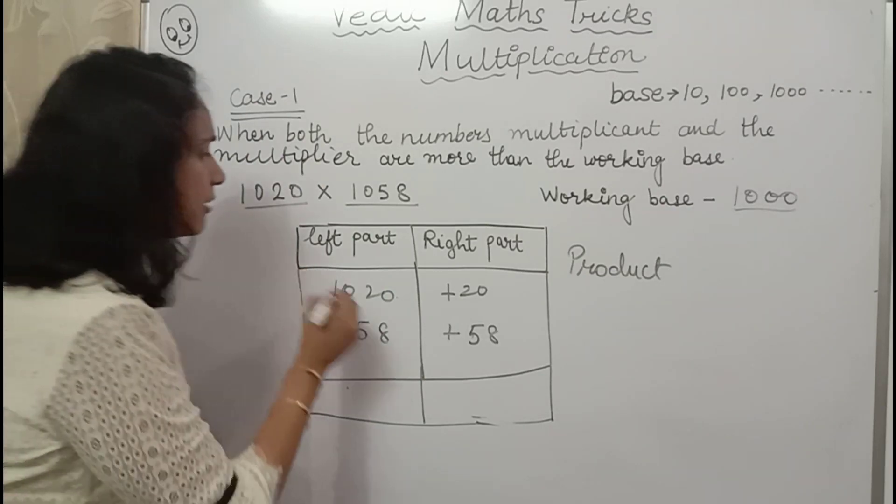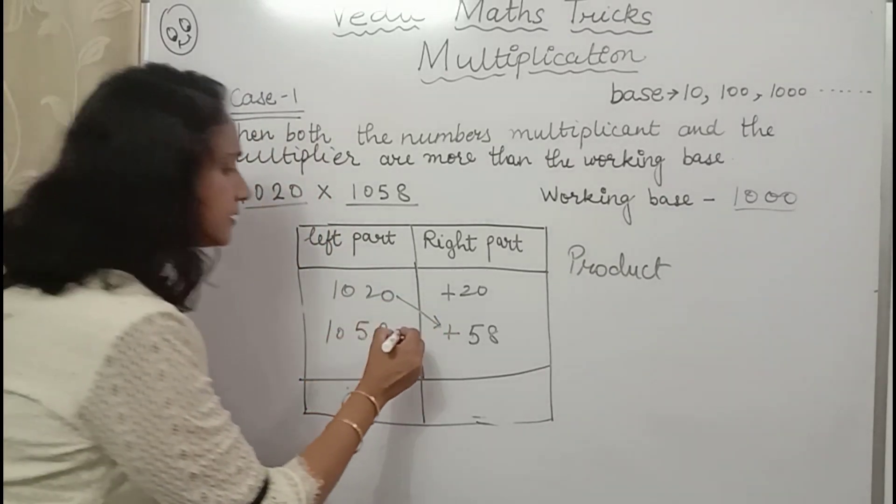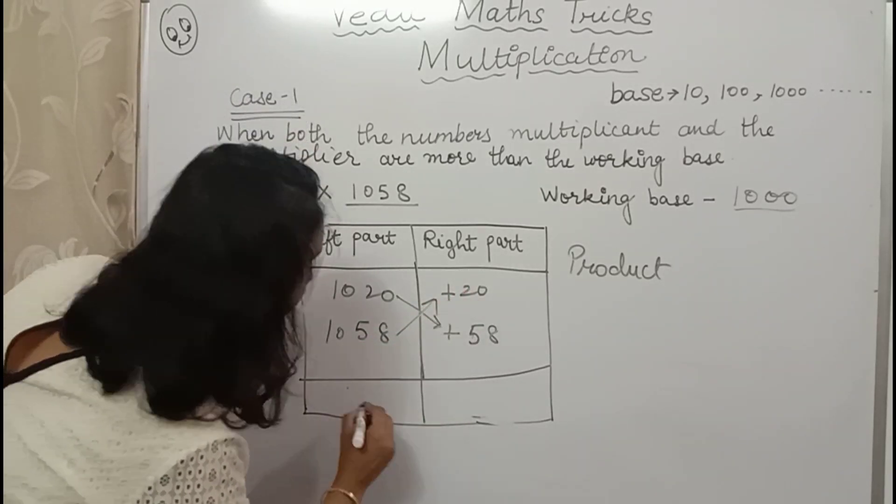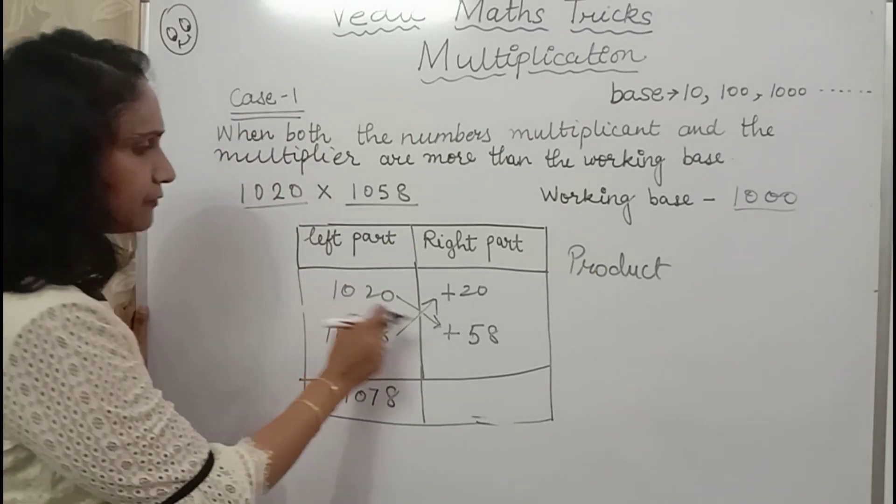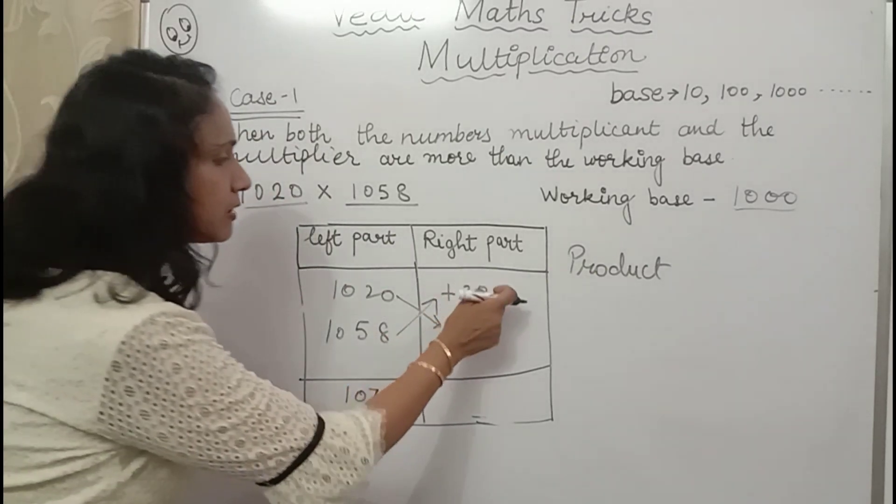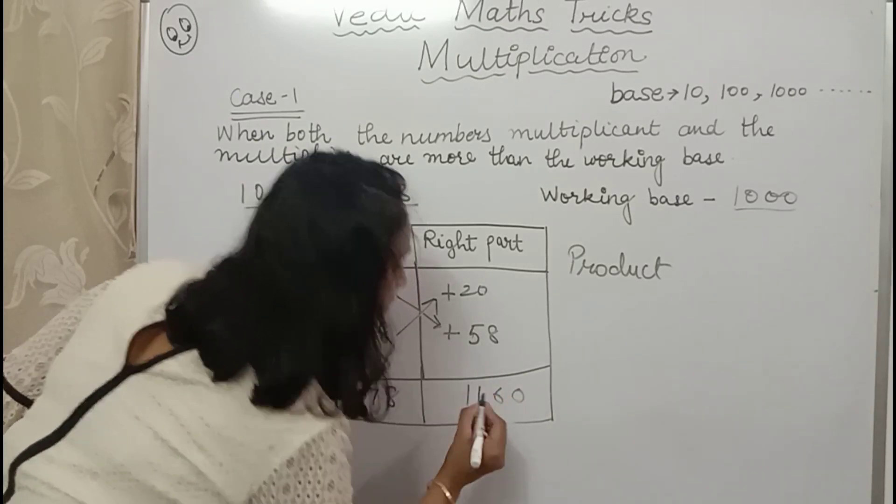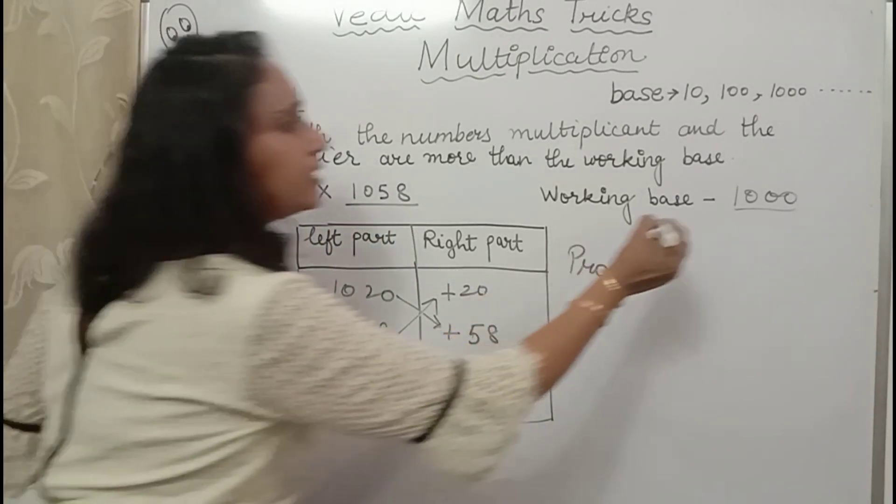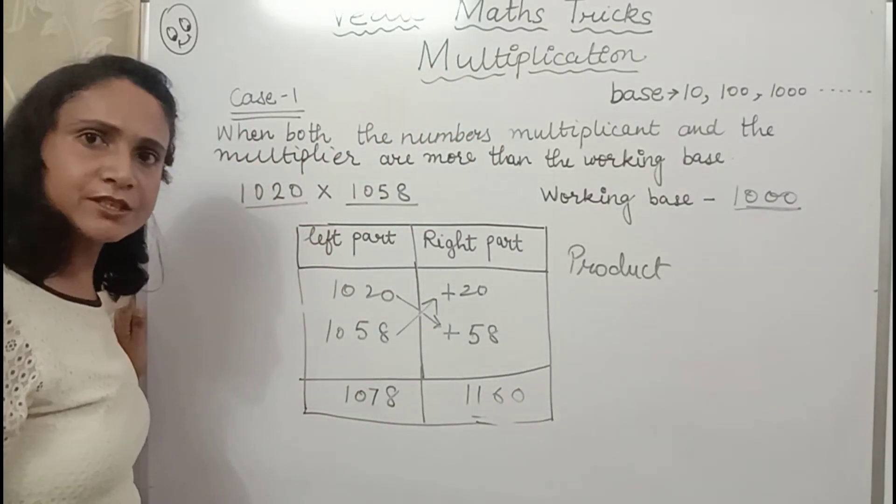First we will find out the left part by evaluating our cross. I told you both ways, you will get the same answer. 1058 plus 20 is 1078. Same way you will get the same answer here. Now you will multiply these two, 0, 8, 16, 1, 1, 6, 0. Now how many zeros are there in working base? There are 3 zeros. So here I should have 3 digits.